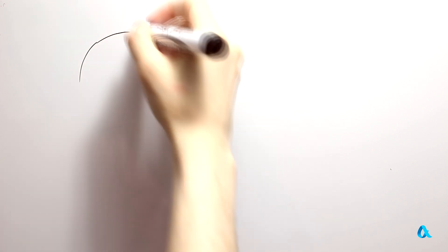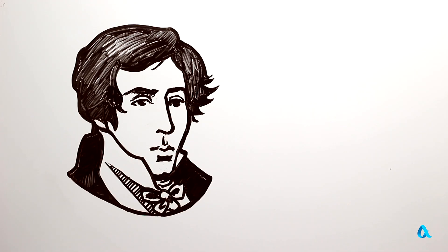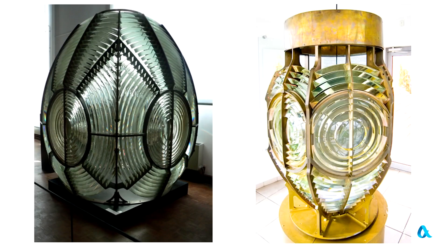But they work excellently in searchlights of lighthouses. Fresnel invented those lenses precisely for using them in lighthouses, since their thickness and weight are much smaller than those of ordinary lenses and they may be assembled from separate parts.